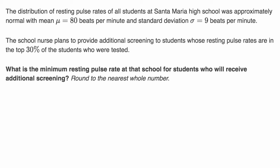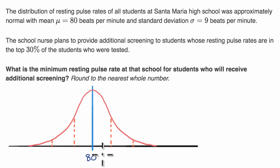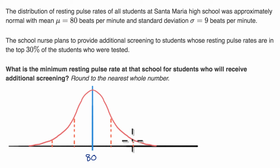They're telling us that the distribution of resting pulse rates is approximately normal, so we can use a normal distribution. They tell us the mean is 80 beats per minute, and the standard deviation is nine beats per minute. On this normal distribution, one standard deviation above the mean would be 89, and two standard deviations above the mean would be 98. This distance right over here is nine.